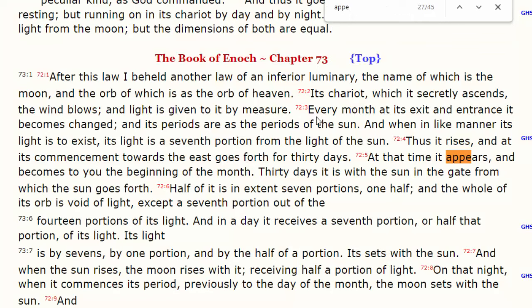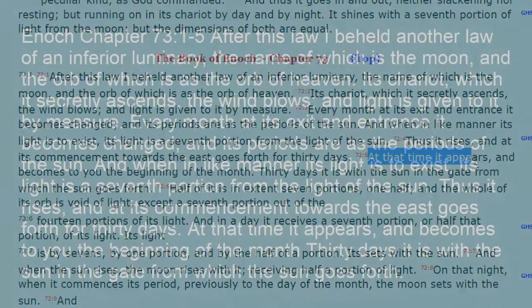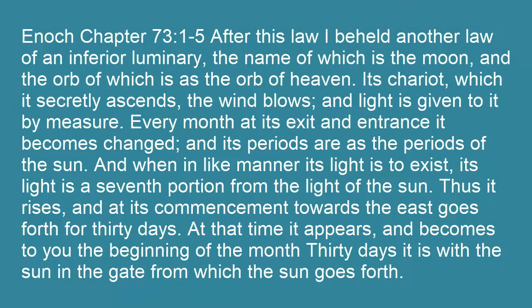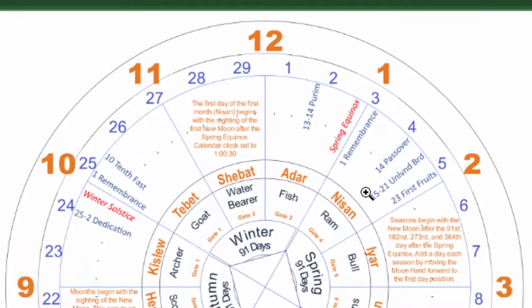We see down here in the book of Enoch chapter 73 that once we have the appearance of the new moon, that's when we have the beginning of the months. So just like Genesis chapter 1 and verse 16 says, we have the Sun, the moon, and the stars to be our sacred calendar. The year starts — the first day of the year — when the new moon appears.